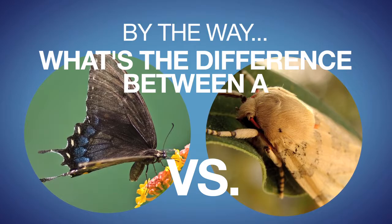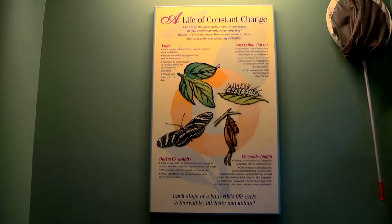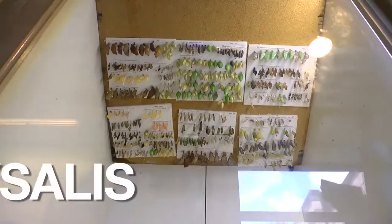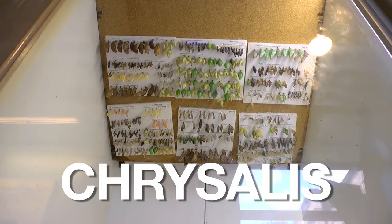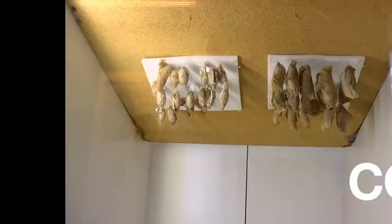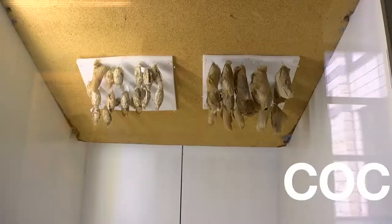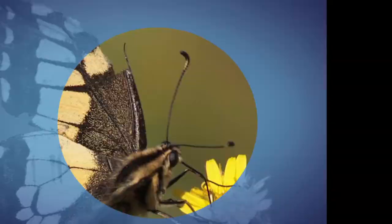By the way, what's the difference between a butterfly and a moth? One of the big differences is the third stage of the life, the pupa stage. A butterfly has a chrysalis, whereas moths have cocoons.